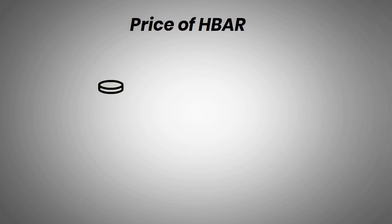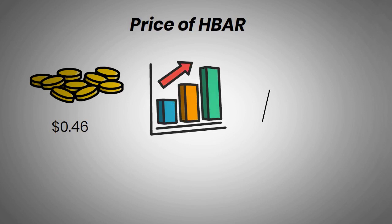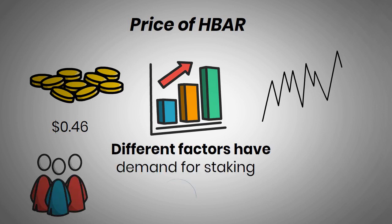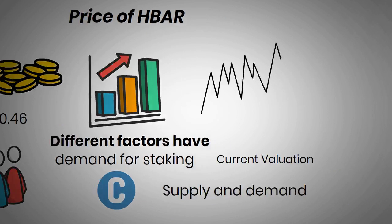The price of HBAR has seen a lot of change, going from lows of under a cent to highs of 46 cents. However, its price movements have rarely been smooth, as HBAR's volatility has led to surges and crashes throughout its history. Many different factors have played a role in determining the price of HBAR, including the number of developers on the network, demand for staking, and trends in the rest of the crypto market and wider economy. Its current valuation is derived from the balance of supply and demand in the markets and constantly changes.